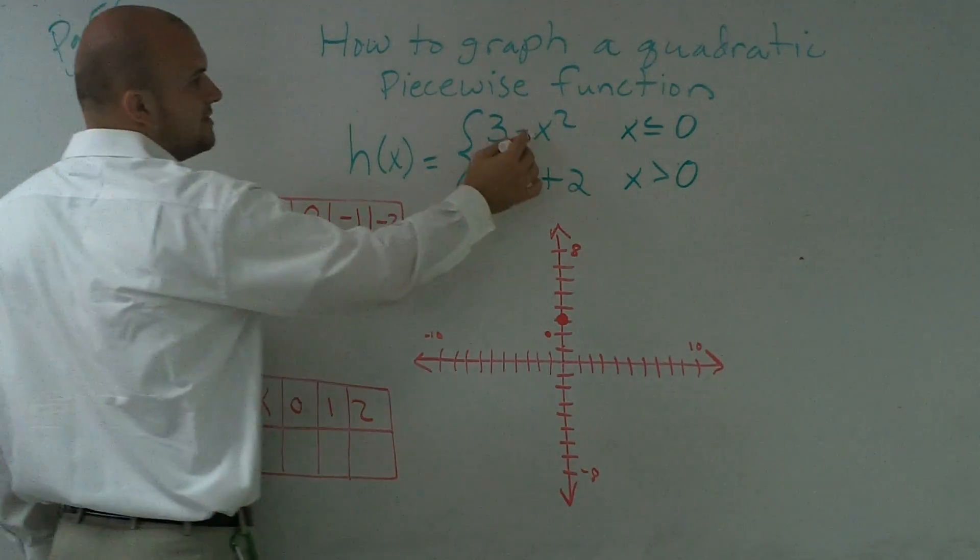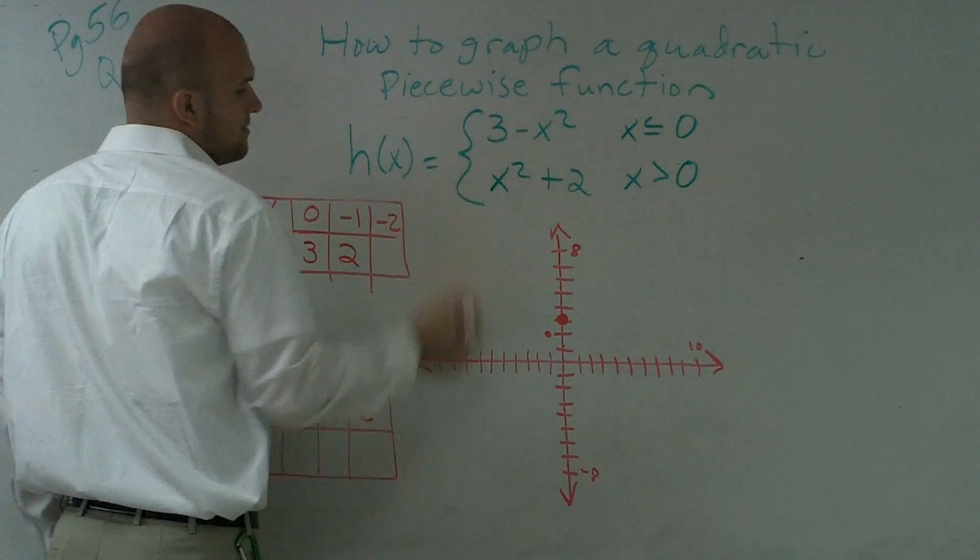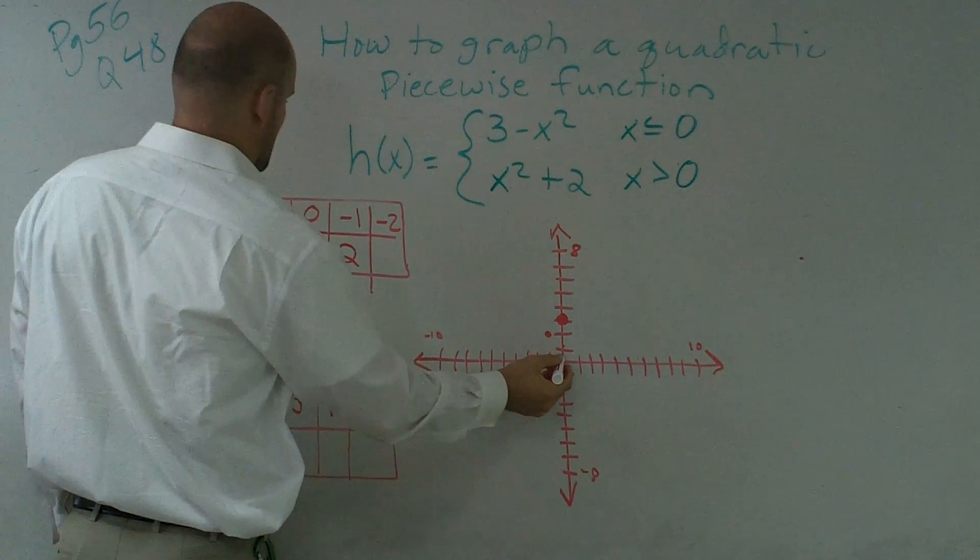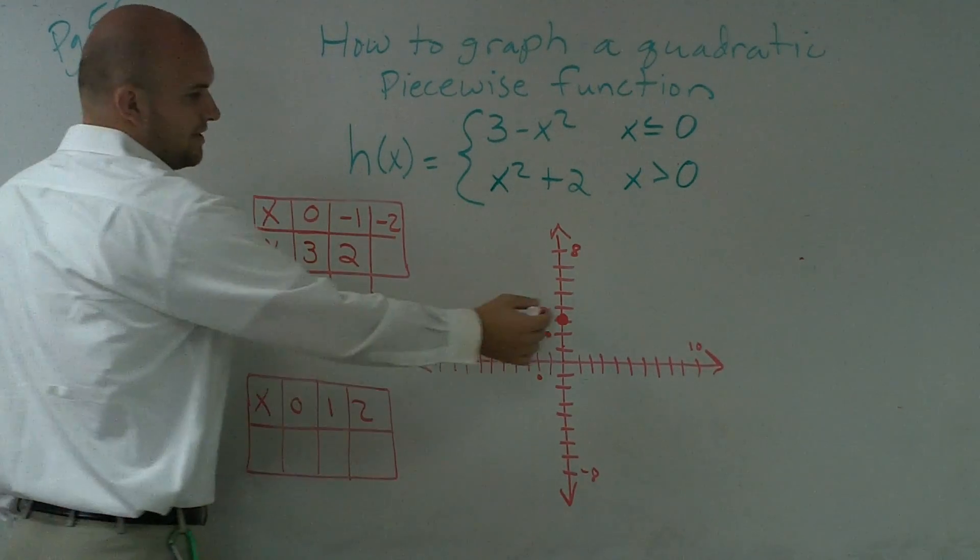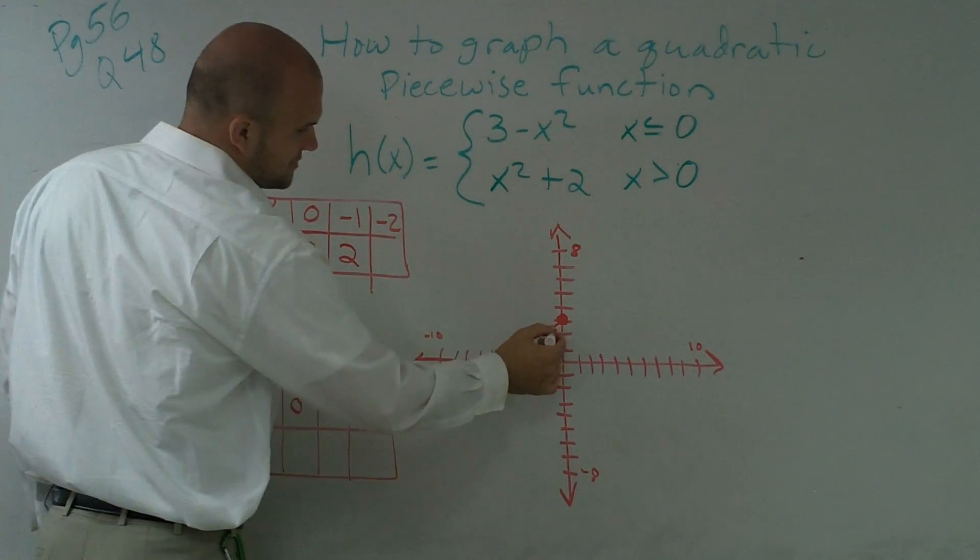And then I'm going to do negative 2. Negative 2 times negative 2 is 4. 3 minus 4 is negative 1. So at negative 2, negative 1. So roughly, my graph is going to continue down in this direction.